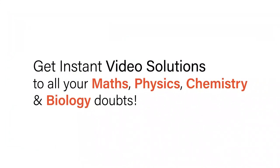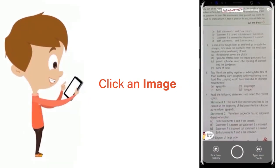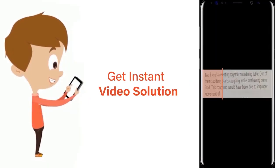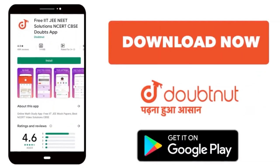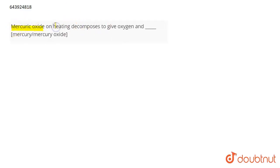With Doubtnet, get instant video solutions to all your maths, physics, chemistry, and biology doubts. Just click the image of the question, crop it, and get instant video solutions. Download Doubtnet app today. The question is: mercuric oxide on heating decomposes to give oxygen and...